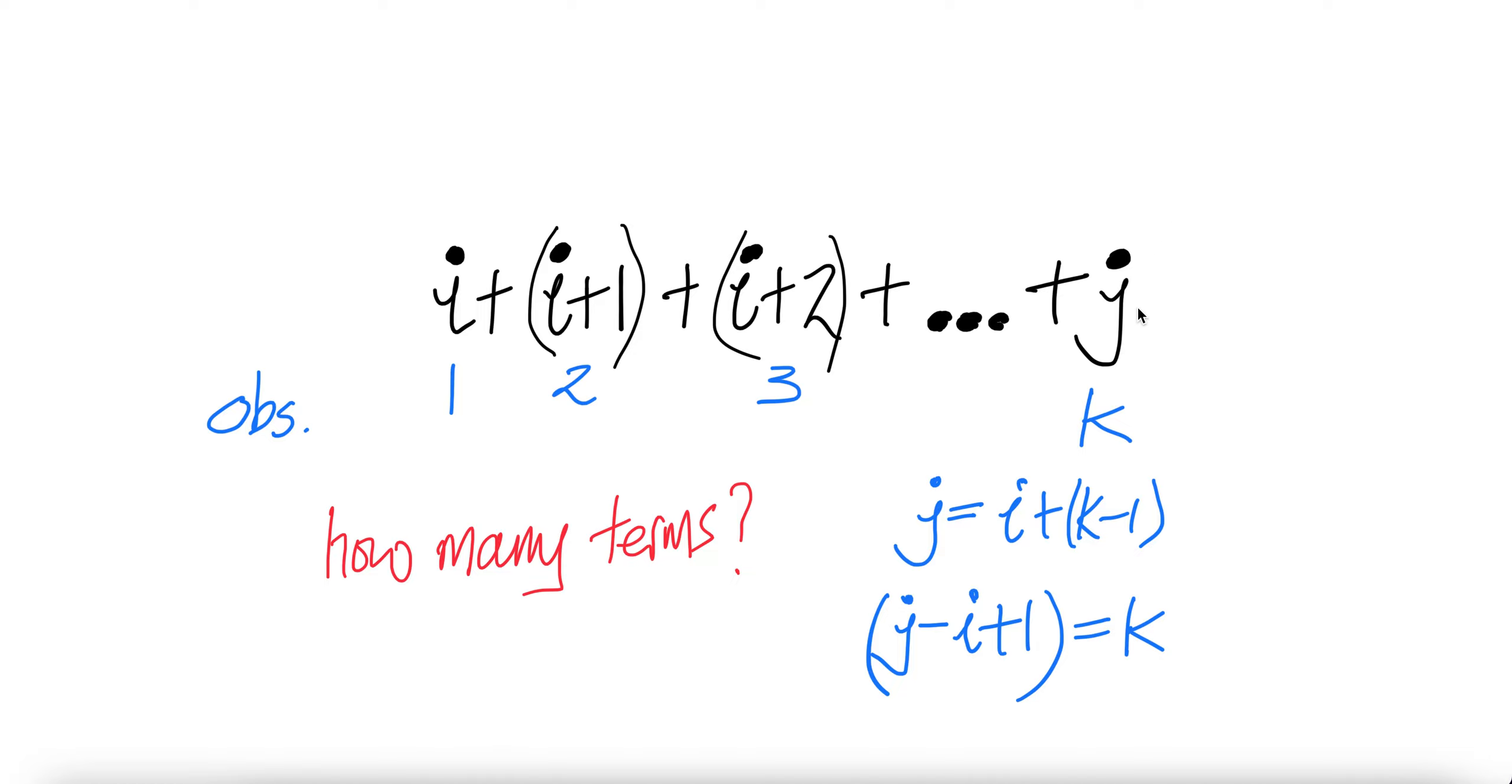This is what term? Let us call this term the K term. So we want to know what K is, what's the value of that. Notice that J, you can get J starting from I. And notice that at the second term you add one, third term you add two. The K term, you need to add K minus one.